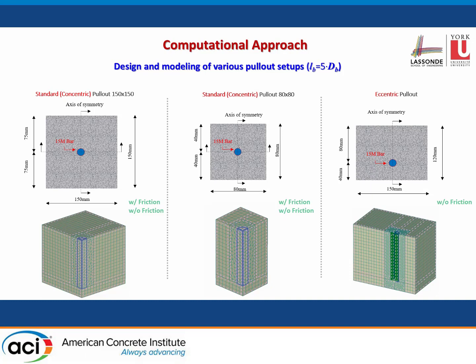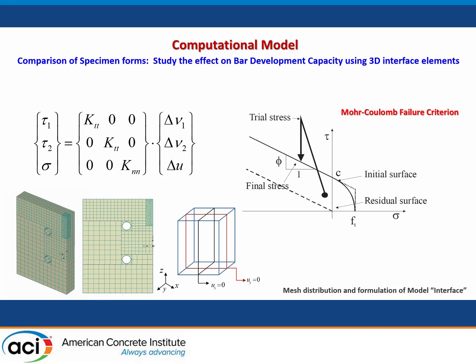Specimen forms considered included the classical standard pull-out test — a cube with the bar embedded inside — which has many known objections. Also considered were smaller-dimension cubes to eliminate spurious influences, the eccentric pull-out, the beam-end test, and other forms. The model used was an advanced Mohr-Coulomb type model considering interfacial properties between bar and concrete, with one quarter of the specimen modeled to optimize computational efficiency.